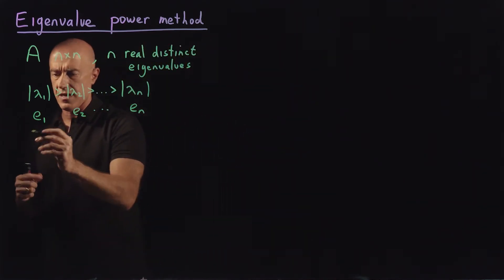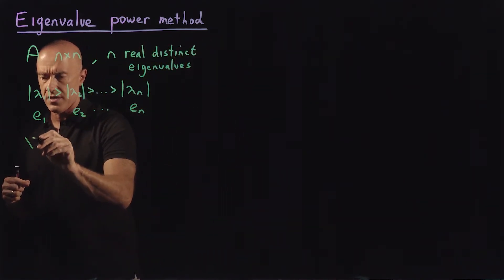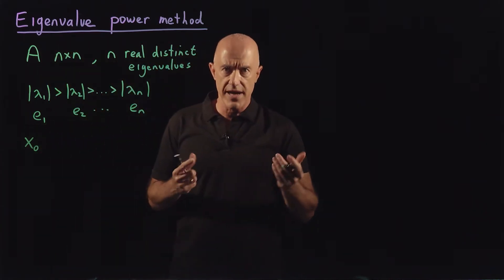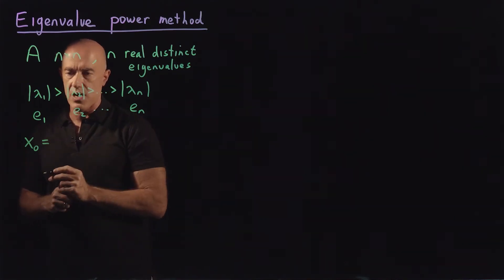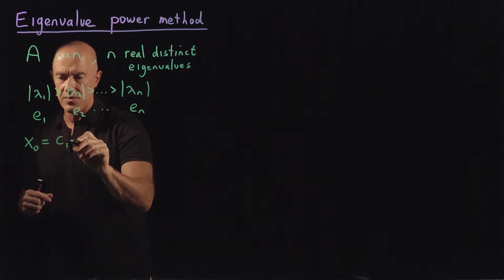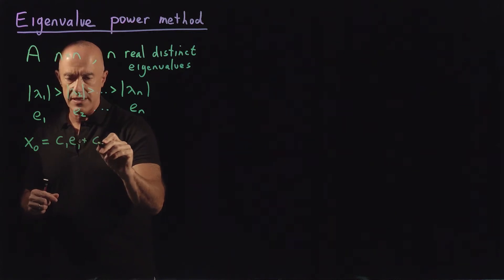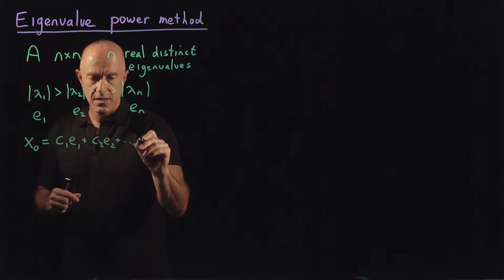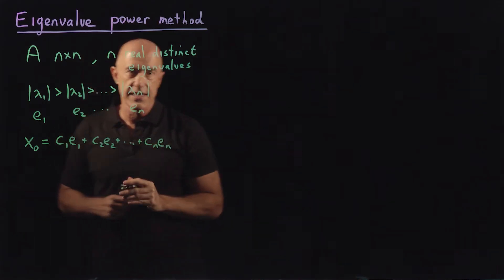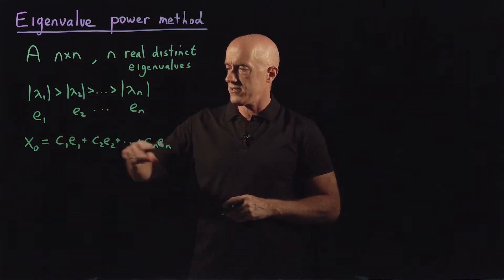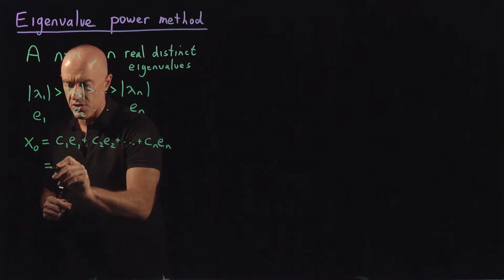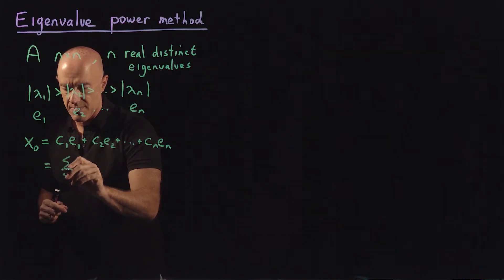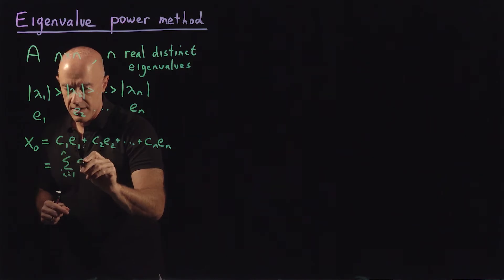So let's call a vector x naught. Okay, any arbitrary vector x naught can be written as a linear combination of e one through e n. So I'll write that as c one e one plus c two e two plus c n e n. So the c's are just real constants. The e's are the eigenvectors. In the summation notation, this is the sum from i equals one to n of c i e i.